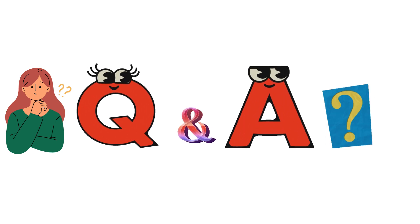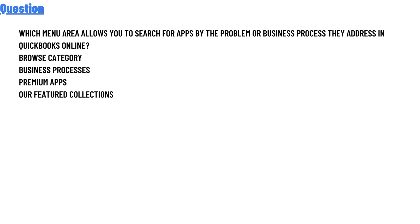Our today's question is: which menu area allows you to search for apps by the problems or business process they are addressed in QuickBooks Online? The options are: Browse category, business processes, premium apps, or features collection.